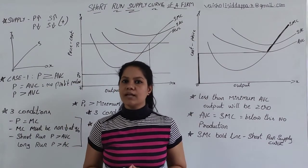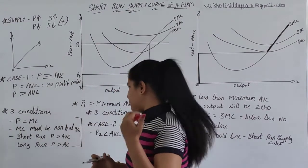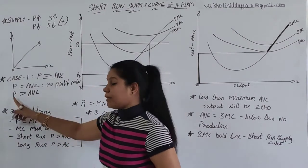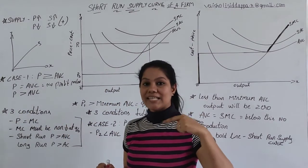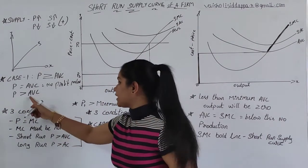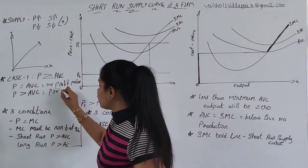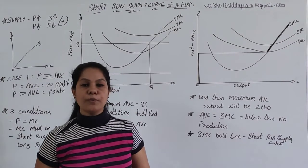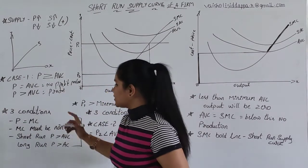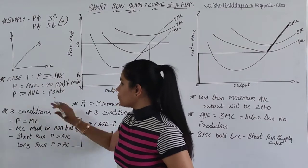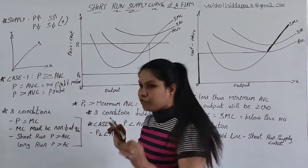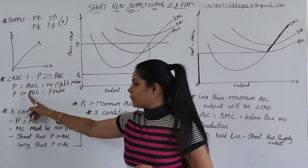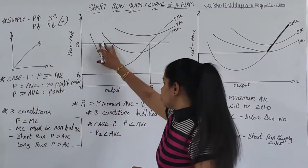In this situation, a firm can successfully run their business. When price is greater than AVC, the firm is going to make a good profit. So let's go with the diagram for the first case, where P should be equal to AVC, or P should be greater than AVC.